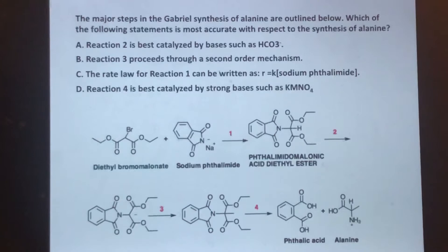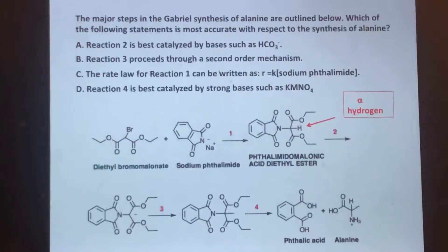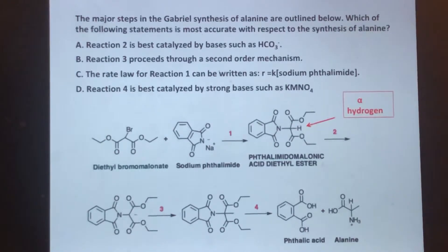Choice A states that reaction two is best catalyzed by bases such as bicarbonate. Looking at reaction two, an alpha hydrogen is being converted into a carbanion. Bases can do this, but you should recognize that strong bases like hydroxide are the ones that can do it. Bicarbonate is too weak of a base to pull off an alpha hydrogen, so we eliminate choice A.